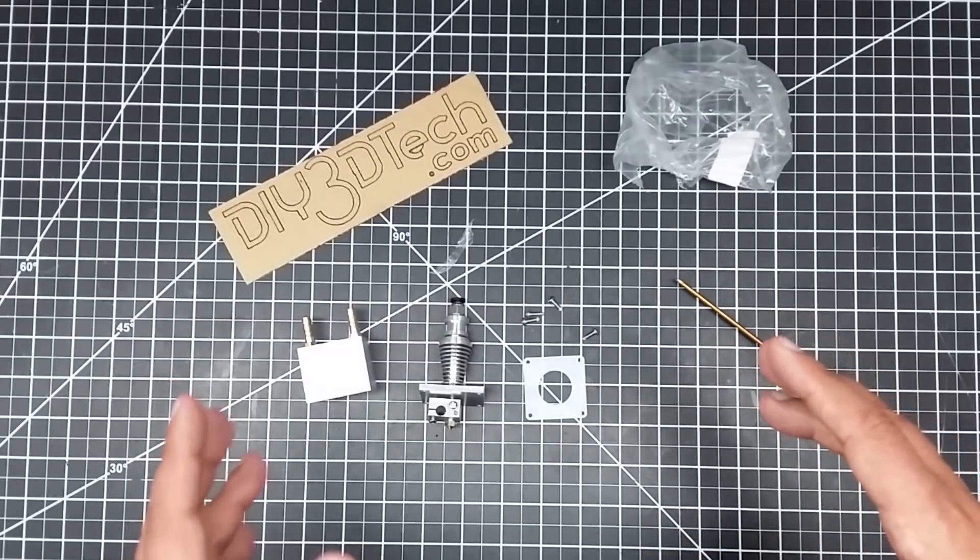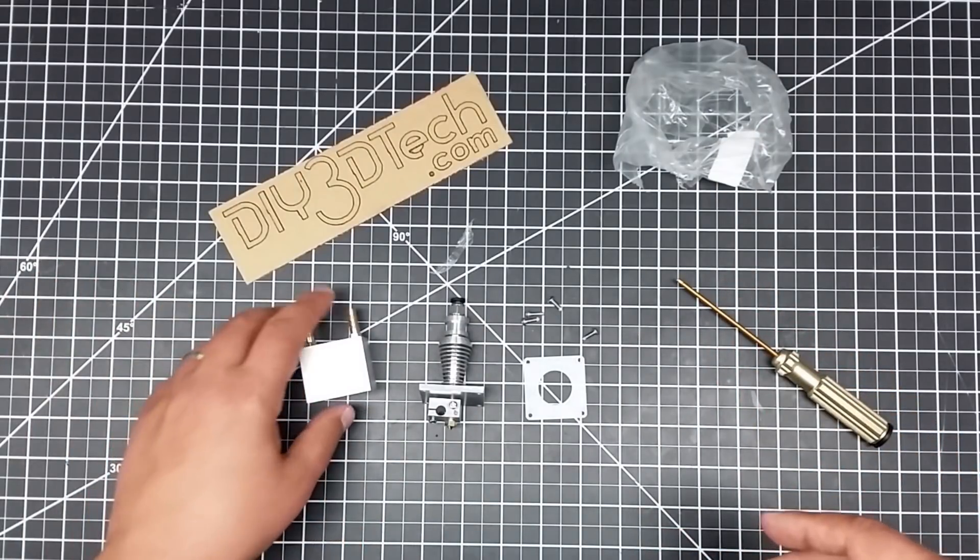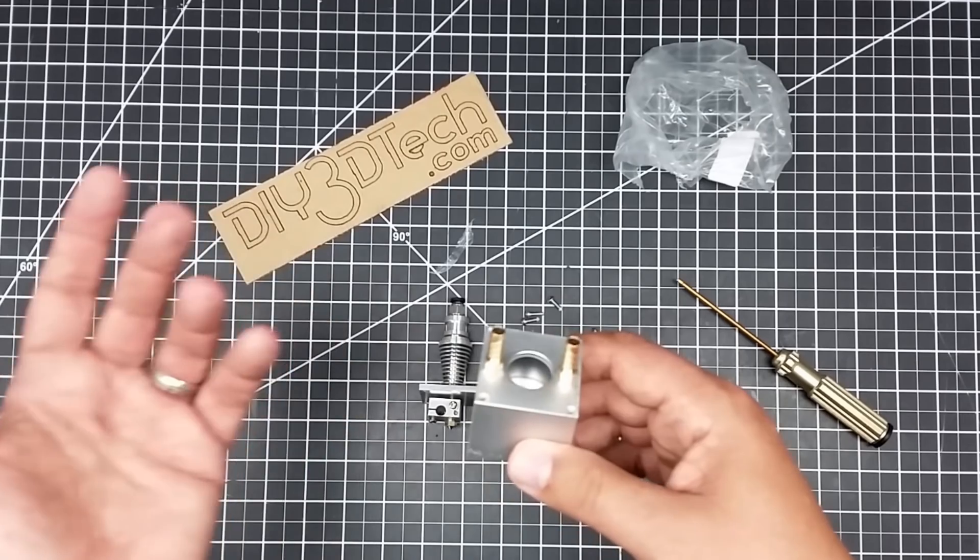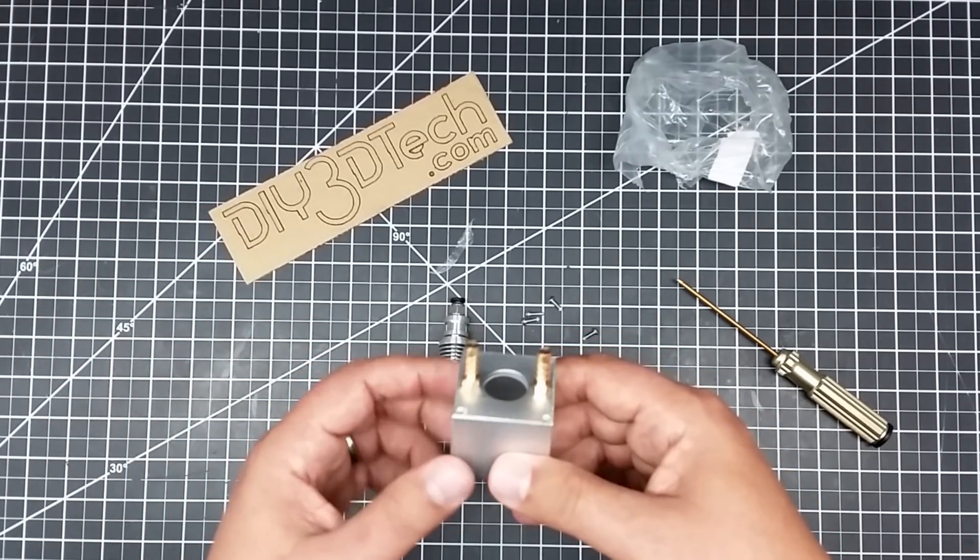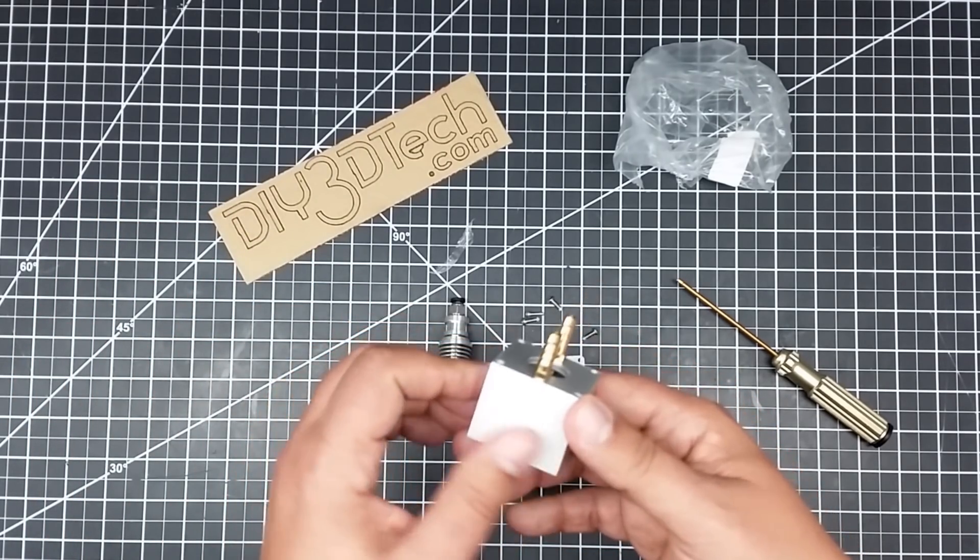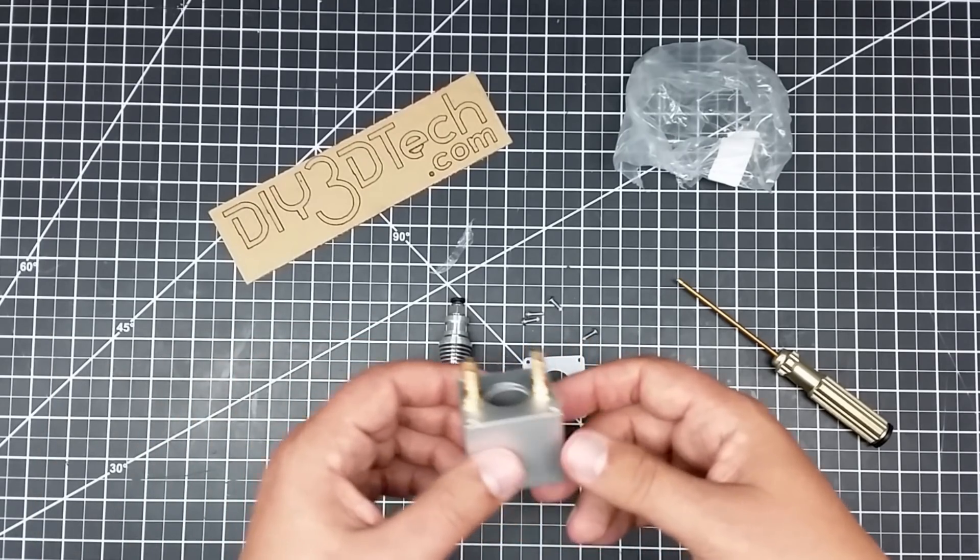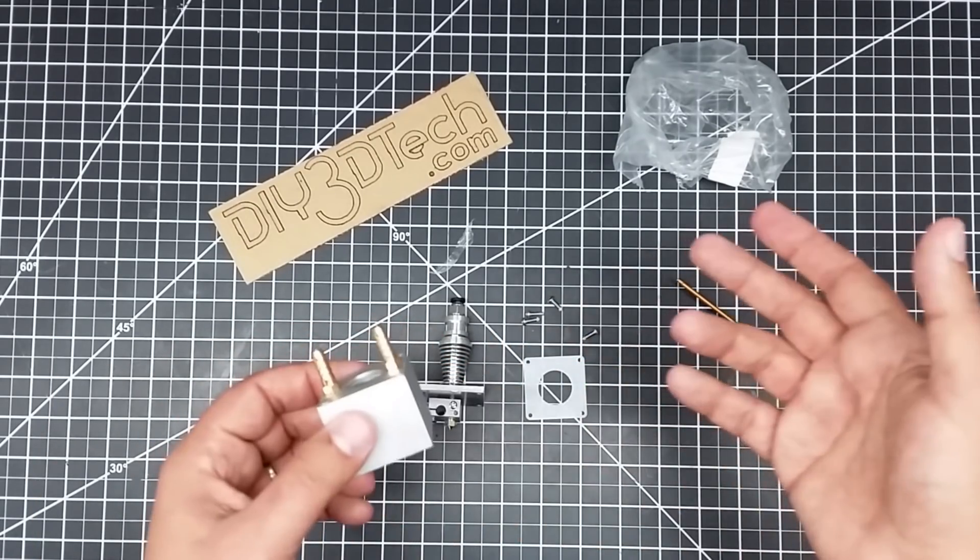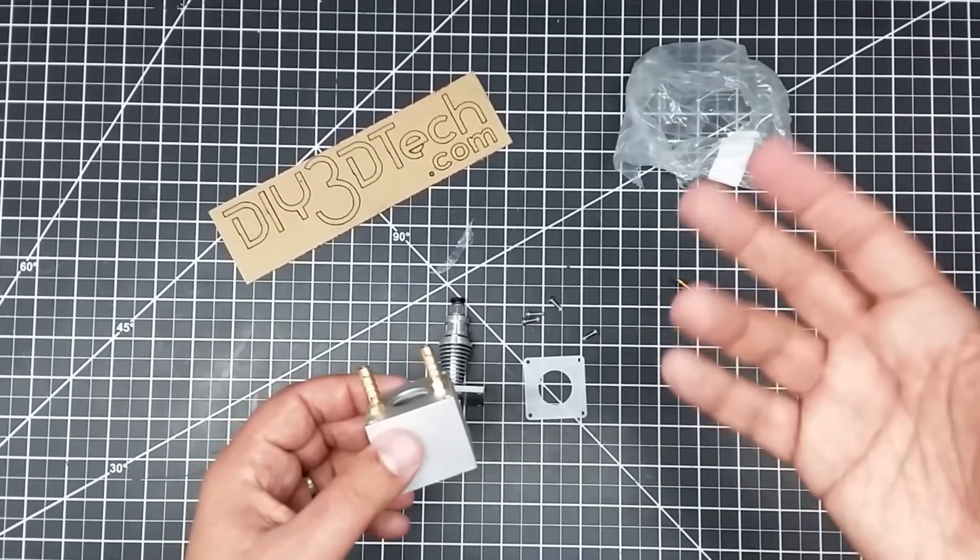I'm going to probably use a similar system to pump this as I do my 3040 CNC water-cooled spindle. Basically, just use a five gallon bucket as a thermal mass and see how that goes and just circulate the water.